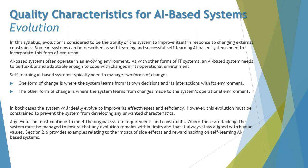However, evolution must be constrained to prevent the system from developing any unwanted characteristics. When talking about self-learning AI-based systems, we must control these systems from going beyond their intended extent and presenting unwanted behaviors. Any evolution must continue to meet the original system requirements and constraints. The system must be managed to ensure that any evolution remains within limits and always stays aligned with human values.